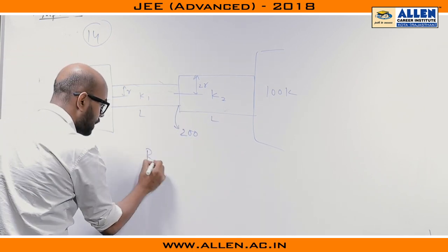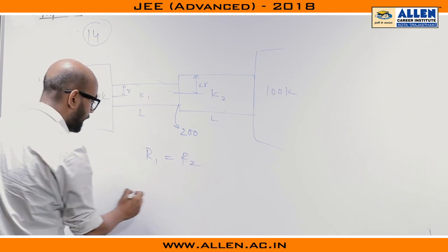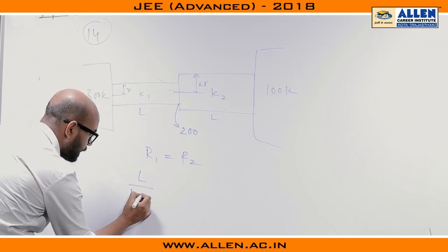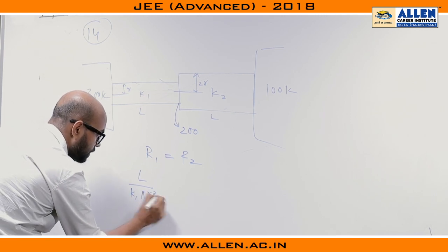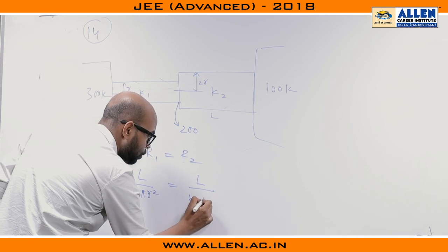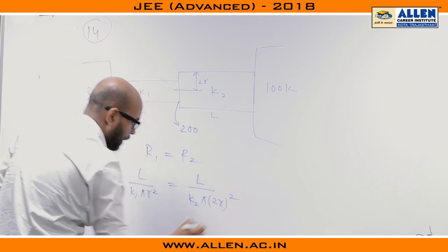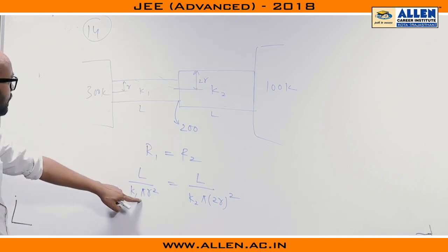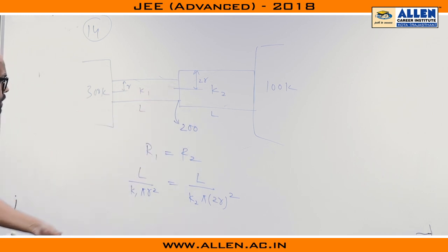So, what we can say R1 is equal to R2 that means L upon K1 into pi R square is equal to L upon K2 into pi 2R whole square. So we have a relation this much L R because the formula of resistance is L upon KA. We have put the value of A pi R square here pi into 2R square.